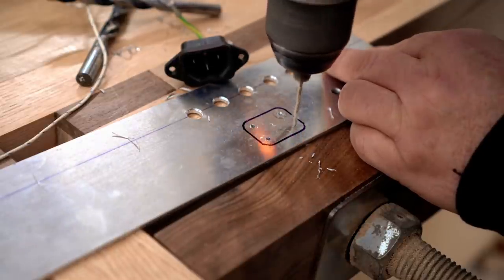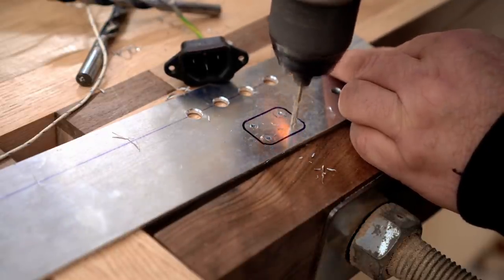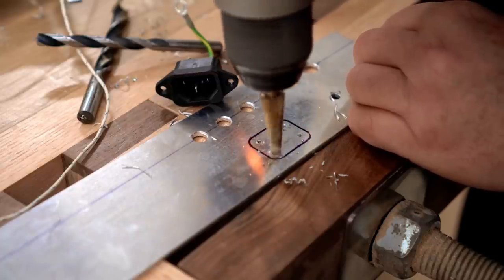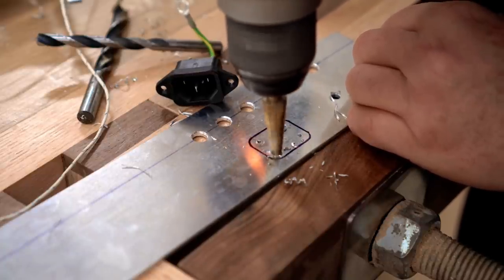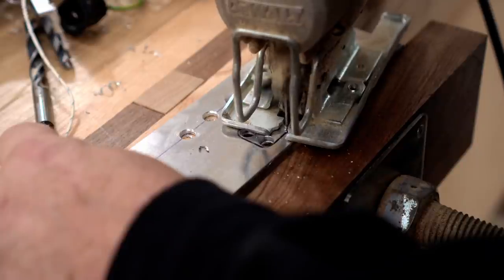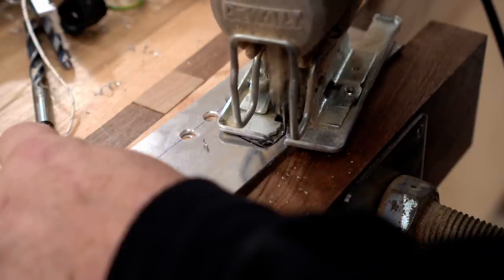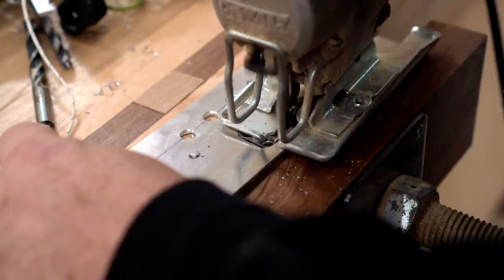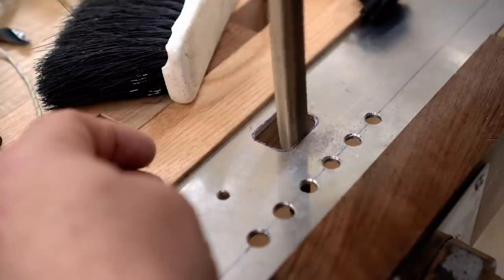A little bit more complex is the hole for the AC input. The one I have has rounded corners. And to get those rounded corners, I'm going to start with a small hole and then ream that out to the line using the step drill. Then I can cut out the rest with the jigsaw and file it the rest of the way so that the jack fits in there.